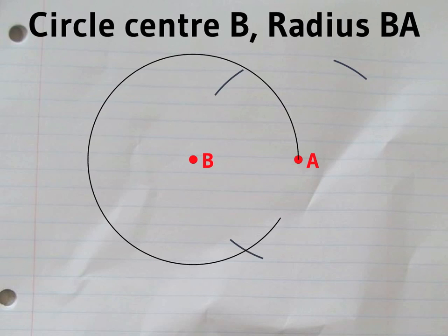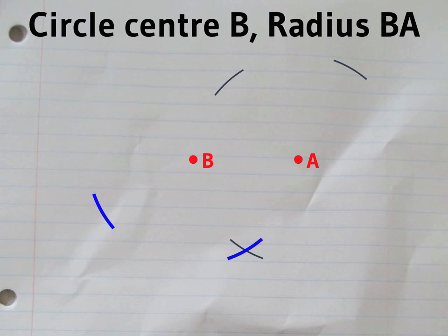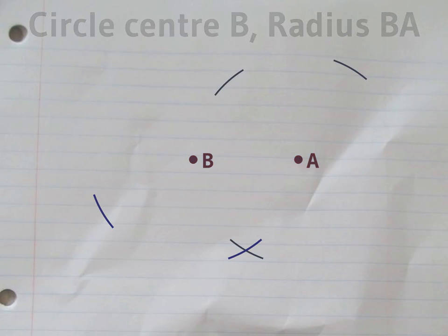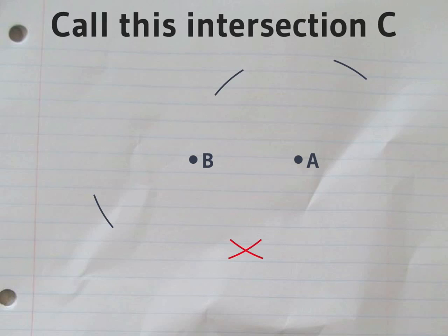Next, draw a circle with the same radius centered on B. These two circles meet in two points. We'll call this one C.